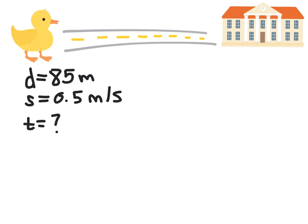The formula for time from the speed-distance-time triangle is time equals distance divided by speed, and now I'm going to go ahead and substitute my values.